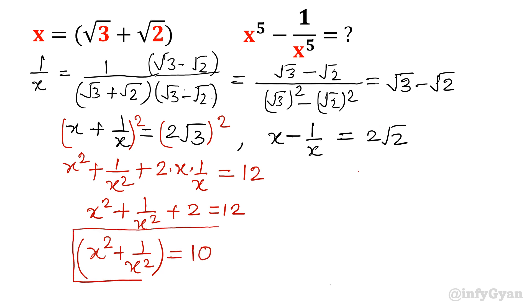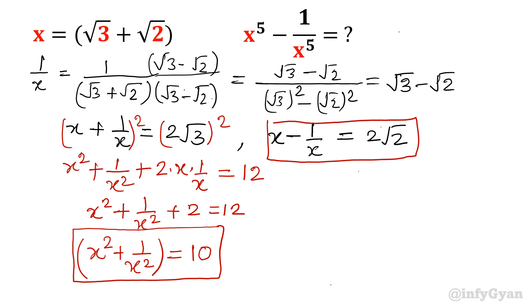Very important result. x minus 1 over x is 2 root 2 — this is a very important result we will use further. And the second result is x squared plus 1 over x squared equals 10.